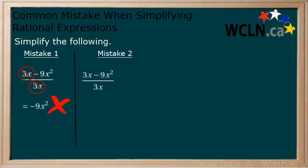Or you might realize that 3x over 3x equals 1, so you reduce this to 1 minus 9x squared. But these answers are incorrect. Let's take a look at why.